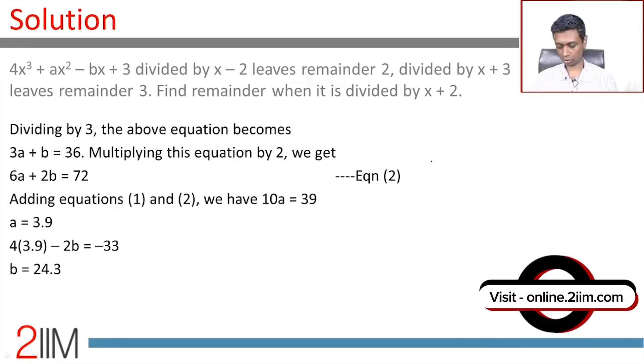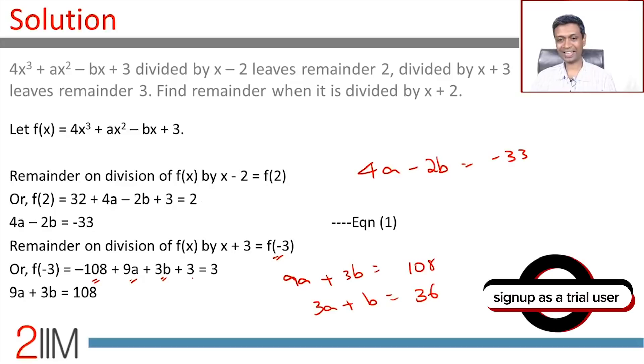So we have 4a - 2b equals -33 and 3a + b equals 36. Multiplying by 2, we can write this as 6a + 2b equals 72.